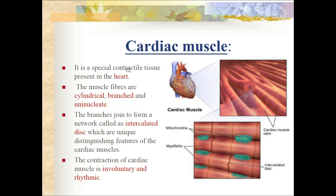Cardiac muscle is a special contractile tissue present in the heart. The muscle fibers are cylindrical, branched, and uninucleate. The branches join to form a network of intercalated discs, which are the unique distinguishing feature of cardiac muscle. The contraction of cardiac muscle is involuntary and rhythmic - it is not under our control.